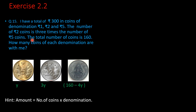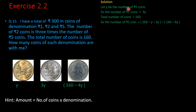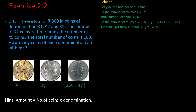Reading the line: the number of rupees 2 coins is 3 times the number of rupees 5 coins — it means if we have 1 five-rupee coin, we have 3 two-rupee coins, so we have fewer 5 rupee coins. Solution: Let y be the number of 5 rupee coins. So the number of 2 rupee coins is 3y. Total number of coins is 160, so the number of 1 rupee coins = 160 − y − 3y = 160 − 4y.